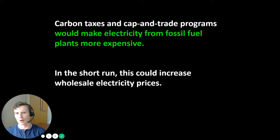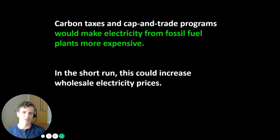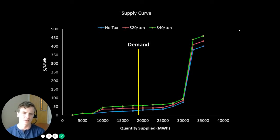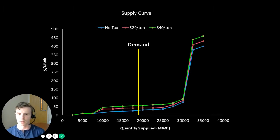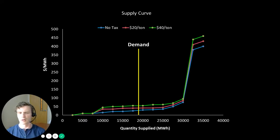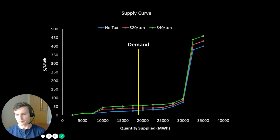Carbon taxes and cap-and-trade programs would make electricity from fossil fuel plants more expensive. In the short run, before we retire those fossil fuel units, this could increase wholesale electricity prices. This figure shows three different system supply curves for a simple electricity market: blue representing no carbon tax, red representing a $20 per ton CO2 carbon tax, and green representing a $40 per ton CO2 carbon tax. Even with the exact same mix of electricity generation and the same amount of demand, this creates three distinct prices, with the higher the carbon tax translating to the higher the market price of electricity.